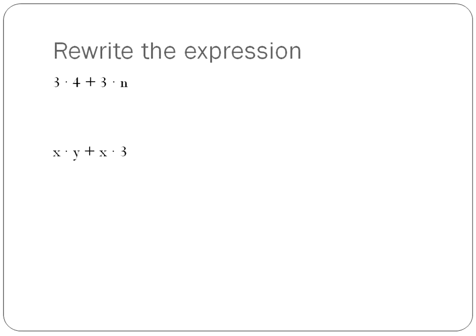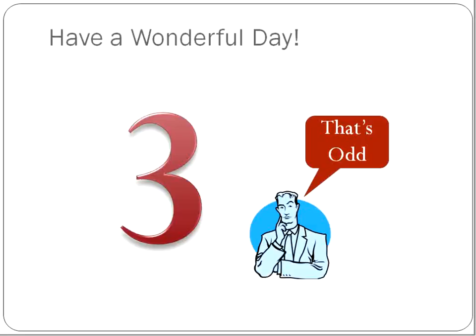Going backwards again: if we're given the same factor appearing in two terms, we can rewrite using the distributive property in reverse — for example, as 3 times (4 plus n). Those are the ways the distributive property works. Again, there's a whole video on the distributive property, but I just wanted to introduce you briefly to these different properties and give you some ways to remember them. Hopefully that lesson has been helpful for you — have a wonderful day.